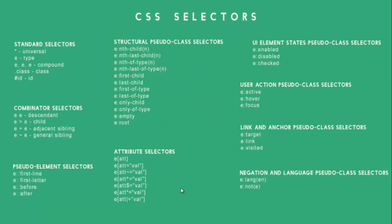The categories that we are going to study are: Standard Selectors, Combinator selectors, Pseudo element selectors, and Structural pseudo class selectors.